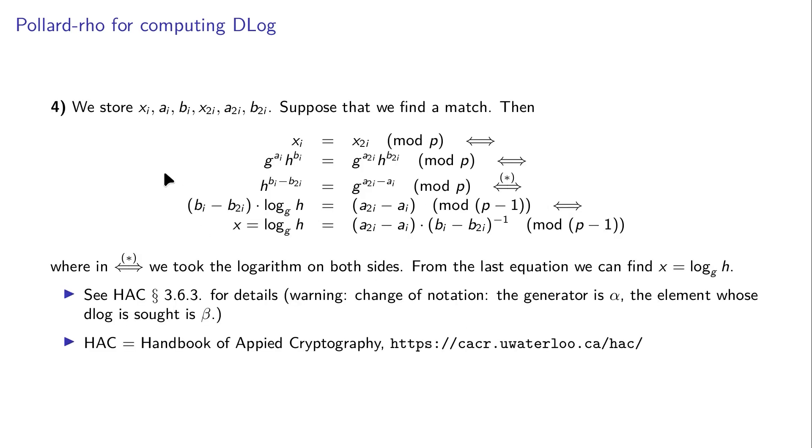When we get a match, x_i equals x_{2i} modulo p. We can separate h on the left and g on the right. When we take the logarithm, we can express h as a function of g. By keeping track of the exponents, simple mathematics allows us to determine the discrete logarithm of h relative to g.